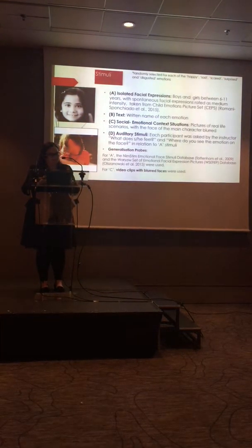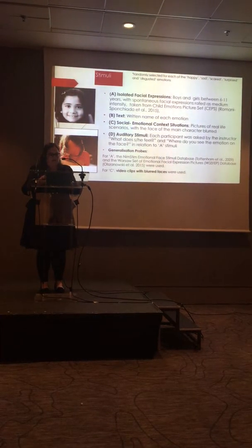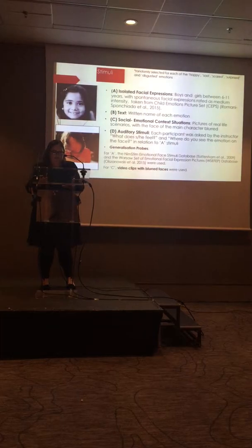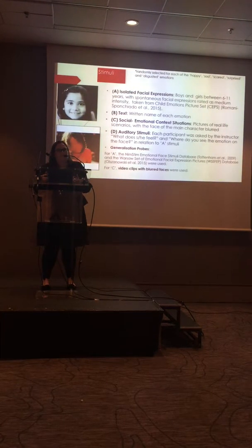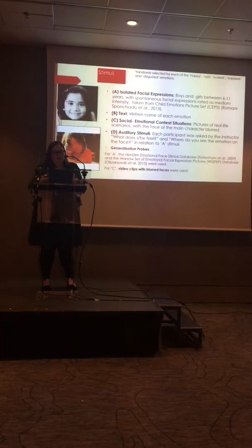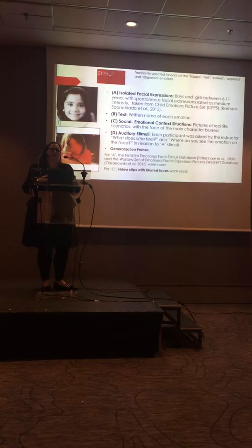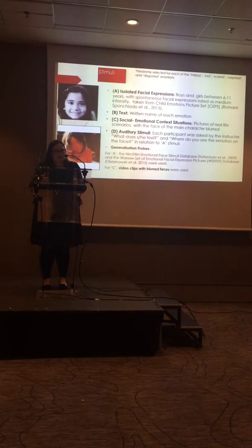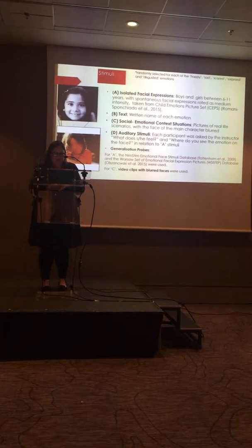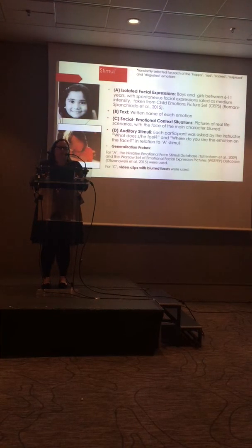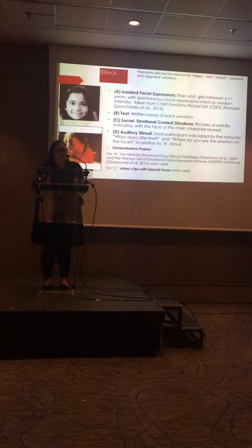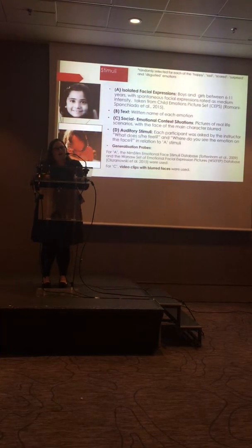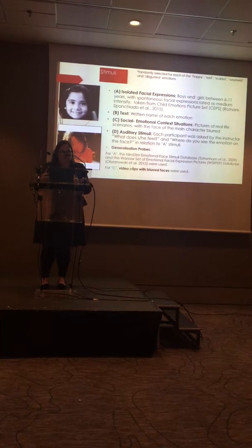These are the types of stimuli that were trained in the study. First, we had the isolated facial expression, using children that were the same age as our participants — between 6 to 11 years. The facial expressions were described as spontaneous and medium intensity, because in normal social situations people don't make a big massive grin but a more subtle expression, making this more likely to generalise to the real world. These were all in black and white because of the set they were taken from. Then there was text with the written name of the emotion, and then social-emotional context situations — a scene where the face was blurred so they couldn't use the face as a cue.